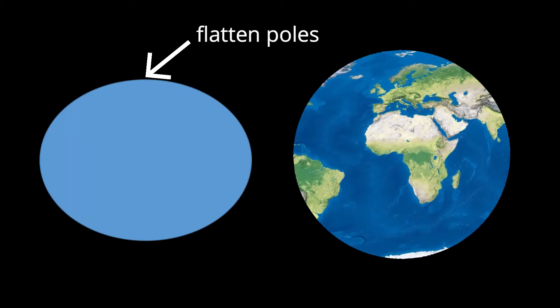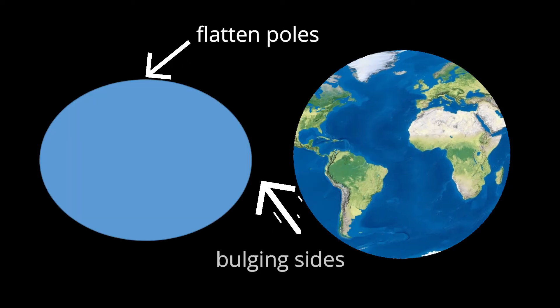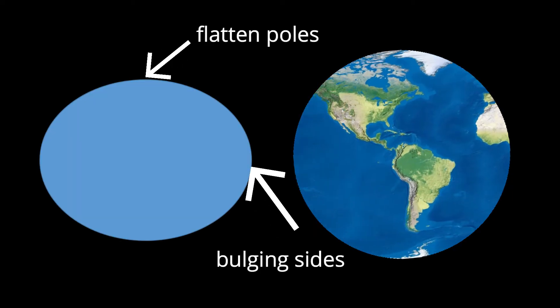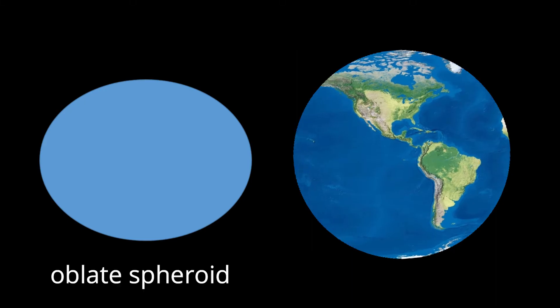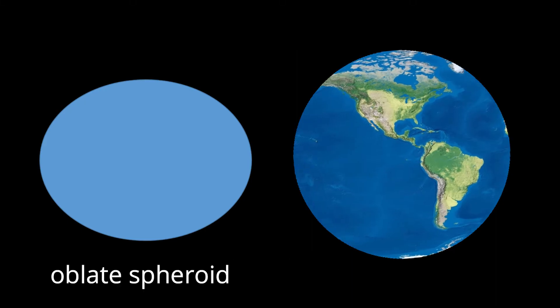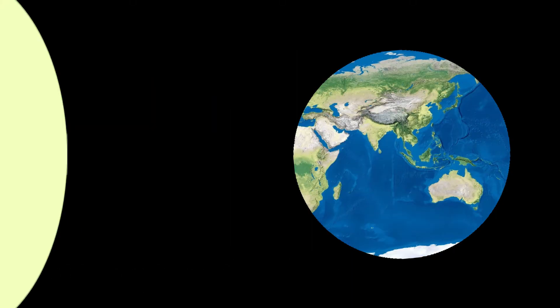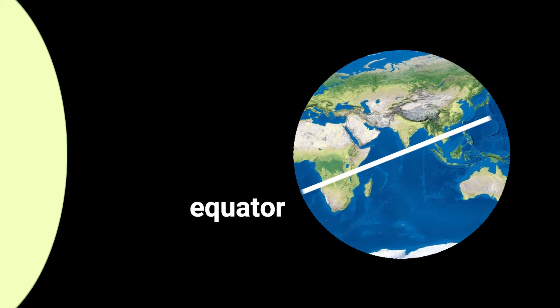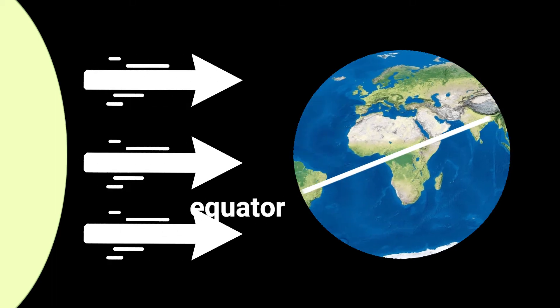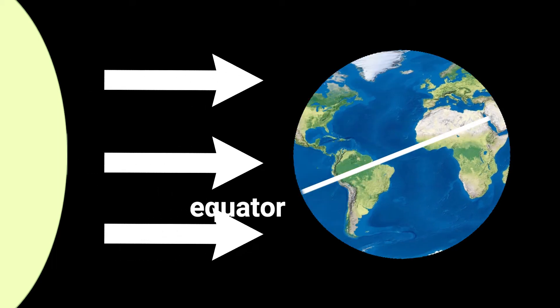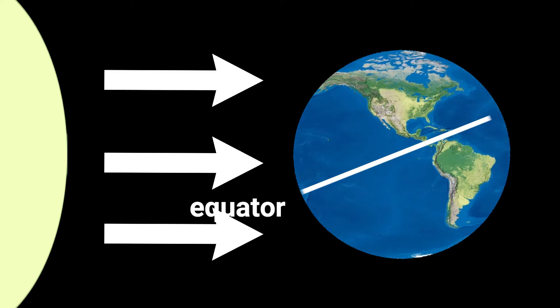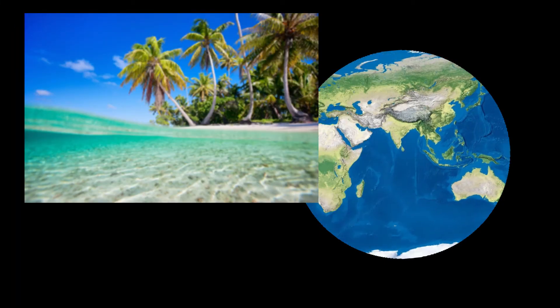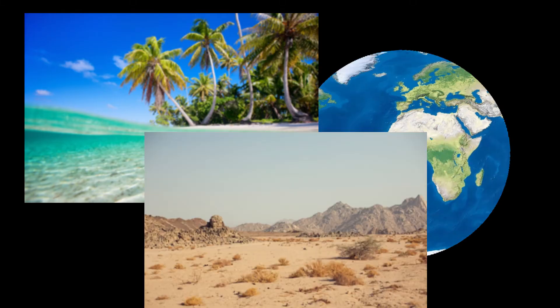This centrifugal force leads to flattening of the poles and bulging at the equator, which results in the shape of the Earth known as an oblate spheroid. This bulging near the equator also affects the climate. Those near the equator experience an abundance of sunlight compared to other places, resulting in a tropical climate or sometimes desert.